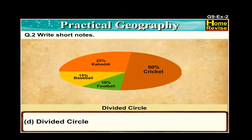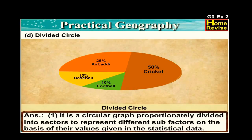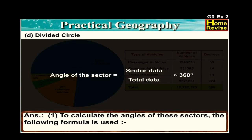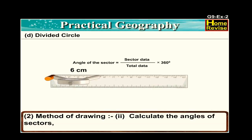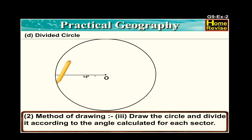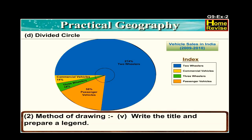Part d: divided circle. A divided circle is a two-dimensional diagram. It is a circular graph proportionally divided into sectors to represent different sub-factors based on their values in the statistical data. The formula used to calculate the angle of each sector is: angle of the sector equals sector data divided by total data, multiplied by 360 degrees. Method: first, select the size of the radius. Second, calculate the angles of the sectors. Third, draw the circle and divide it according to the calculated angles. Fourth, shade the sectors. Fifth, write the title and prepare a legend.